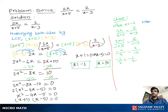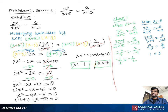When x equals 5, substituting into 2x over x plus 5 equals 2 over x minus 3 gives 2 times 5 over 5 plus 5 equals 2 over 5 minus 3, which is 10 over 10 equals 2 over 2, so 1 equals 1. This confirms the solution is correct.